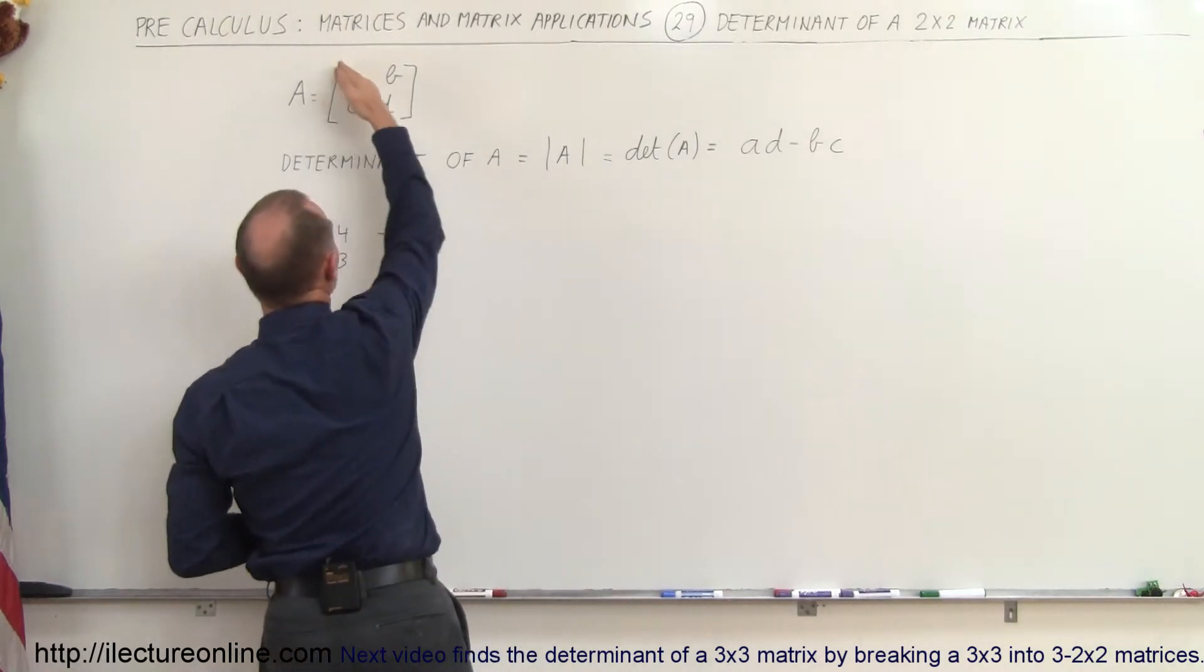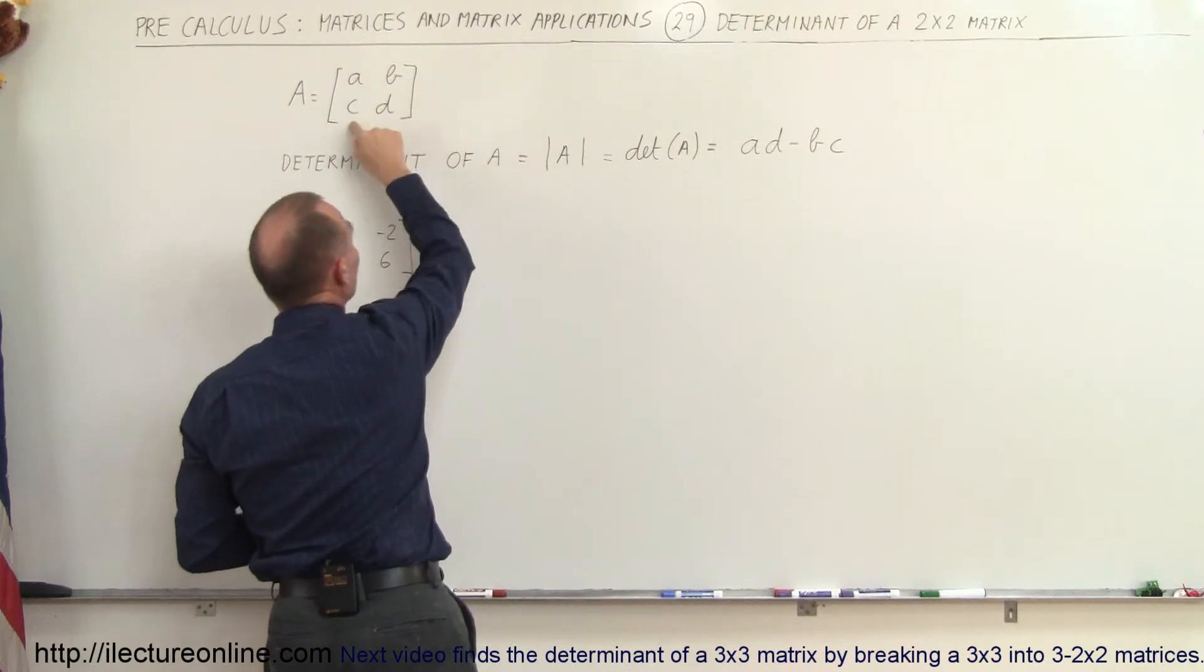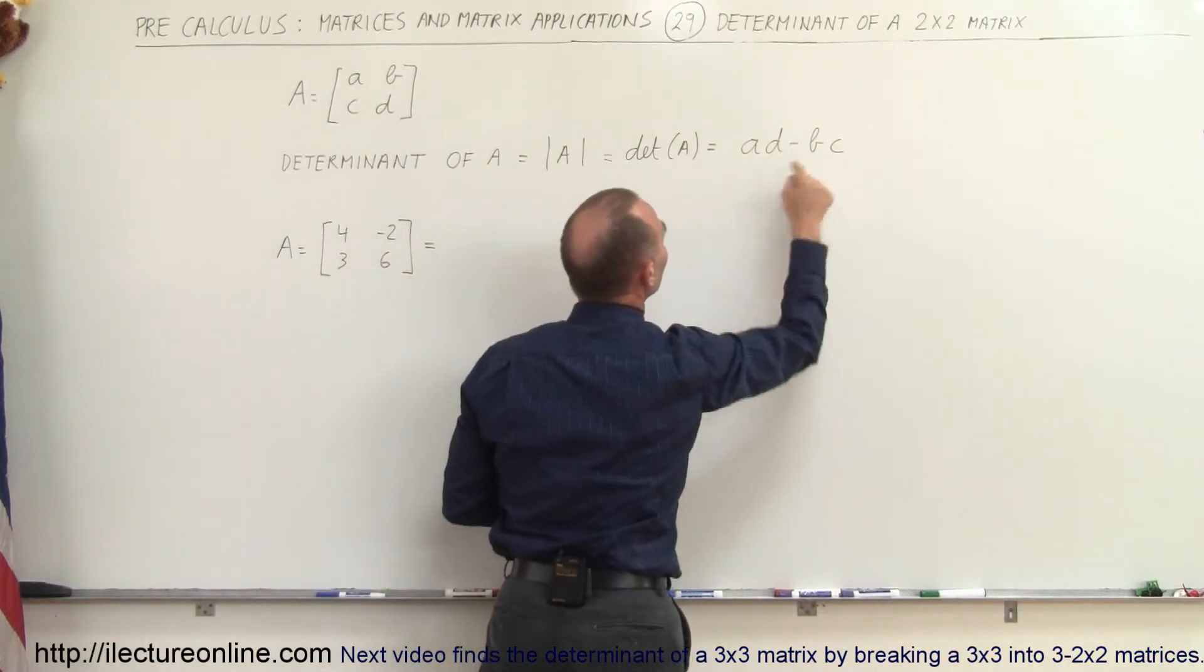it is equal to the product of the diagonal members, or diagonal elements, A times D, minus the product of B times C. So it's A times D minus B times C.